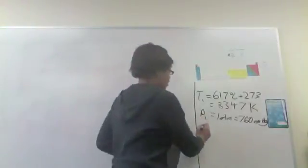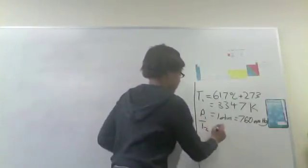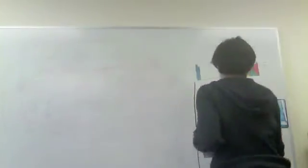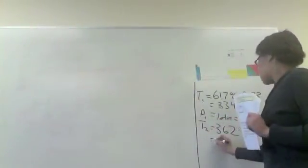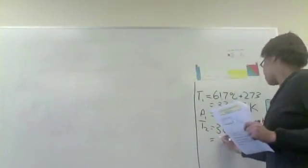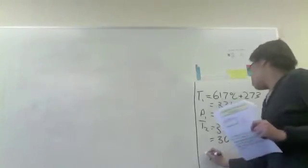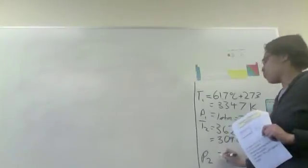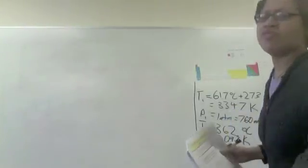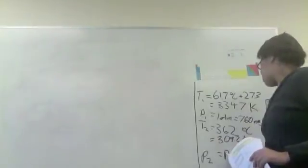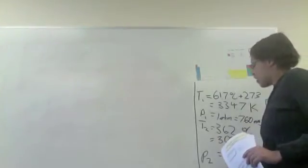Okay, so we know our final temperature here is going to be 36.2 degrees Celsius. That is equal to 309.2 Kelvin, and we would like to figure out what the vapor pressure is at this temperature. So we'll call that P2, and that's what we're trying to find.